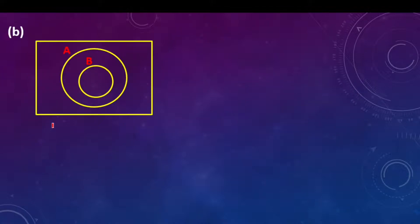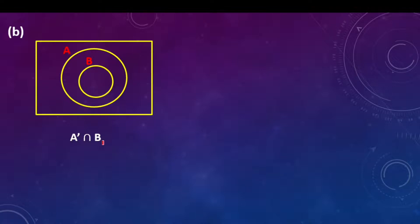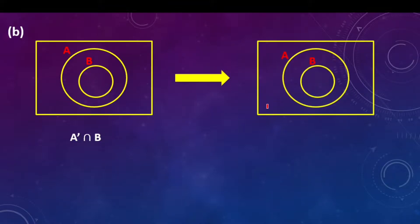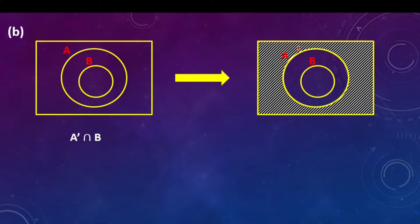Part B: we are given A complement intersection B. It means those members that are not in A, intersected with B. So we are going to shade those members that are not in A — they are here and also here.